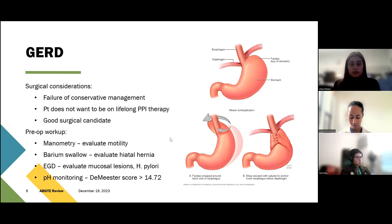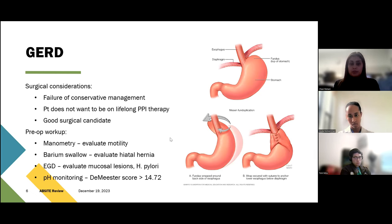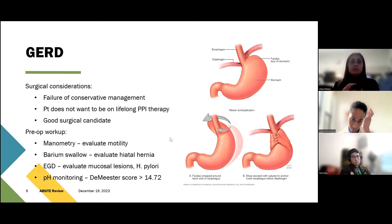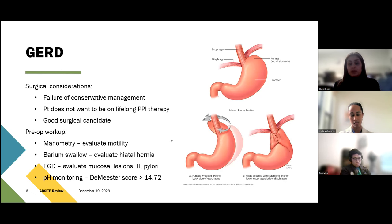The Nissen is a 360-degree wrap. Alternatively, if there's concern for motility problems, you would do a Toupet fundoplication, which is a 270-degree wrap. Common complications include dysphagia post-op, which is normal, but if they have persistent dysphagia at four to six weeks post-op that's getting worse, you would do an EGD and possibly balloon dilation, because at that point it's a technical error or something else happening.